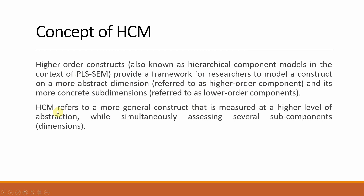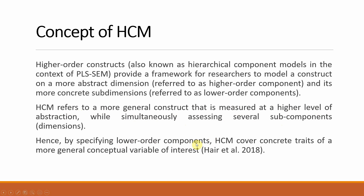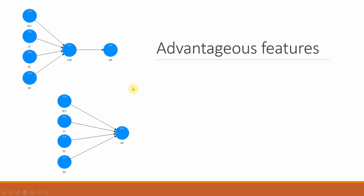Hierarchical component models (HCM) refer to more general constructs measured at a higher level while simultaneously assessing several sub-dimensions. By specifying lower order components, HCM covers concrete traits of a more general conceptual variable of interest. For example, ECC, LC, EC, and DC are the four lower order constructs or sub-dimensions of the higher order construct CSR, which in turn influences organizational performance.